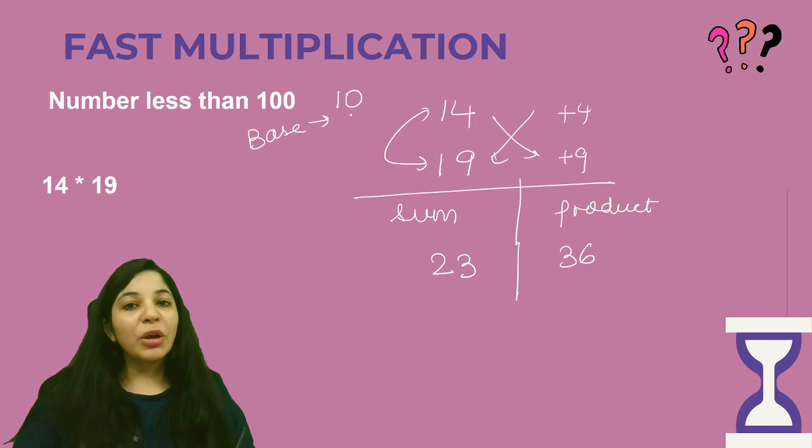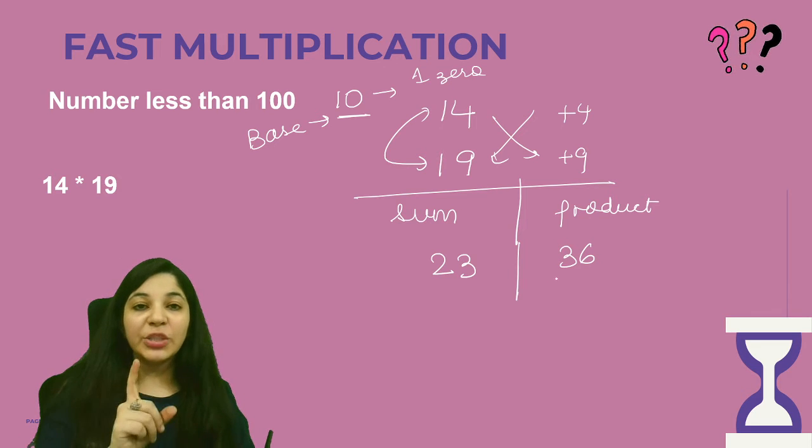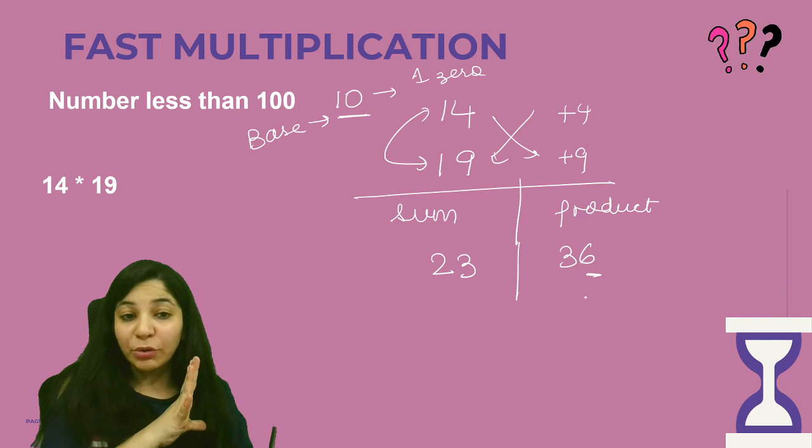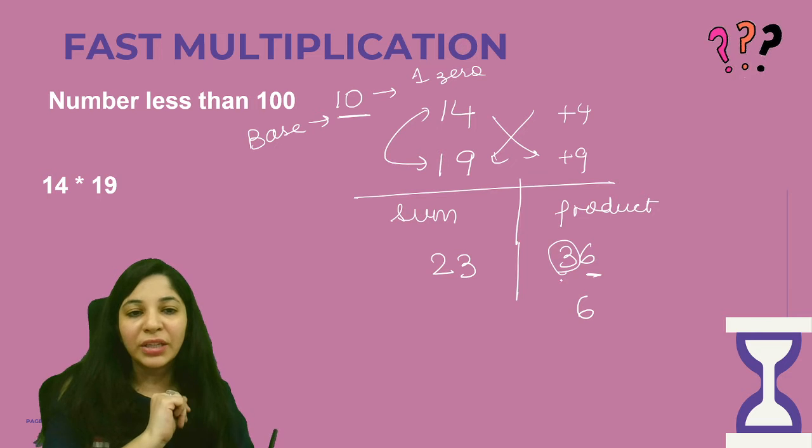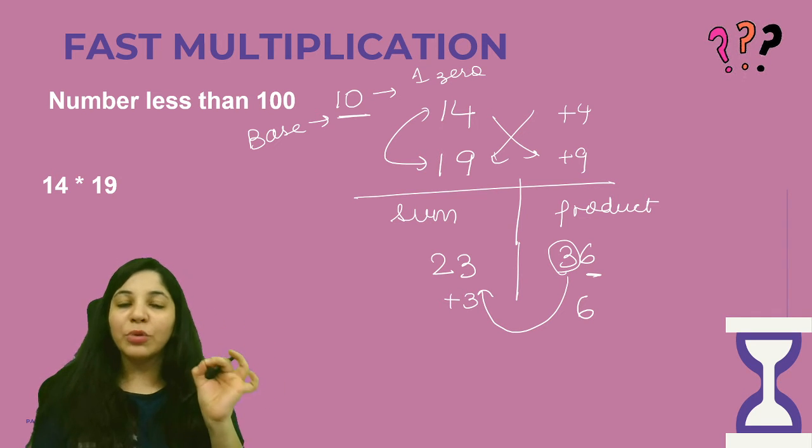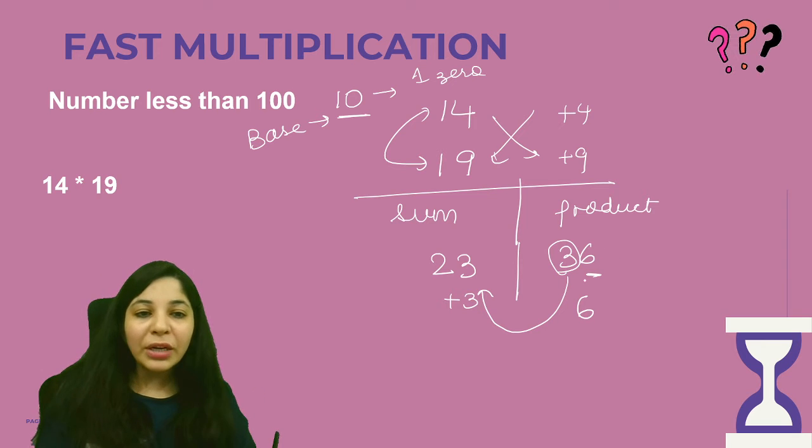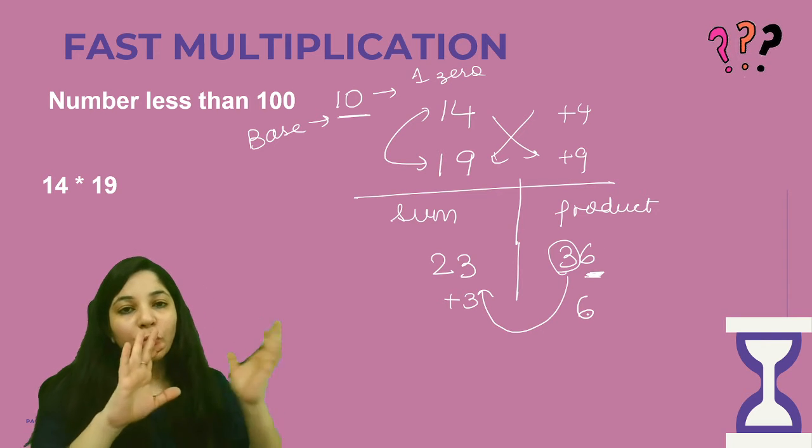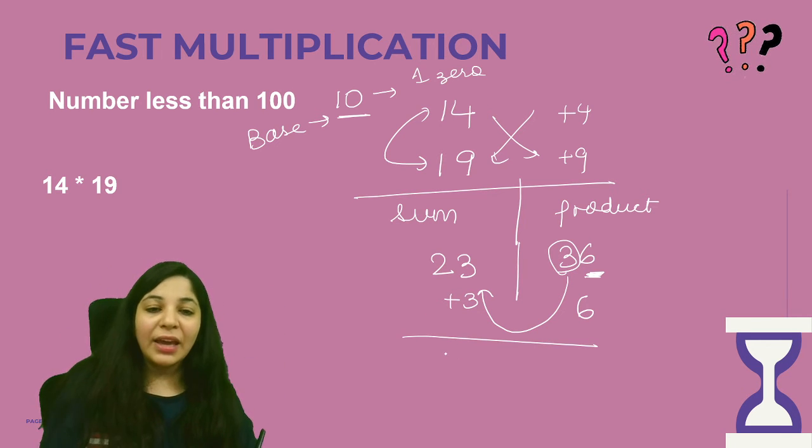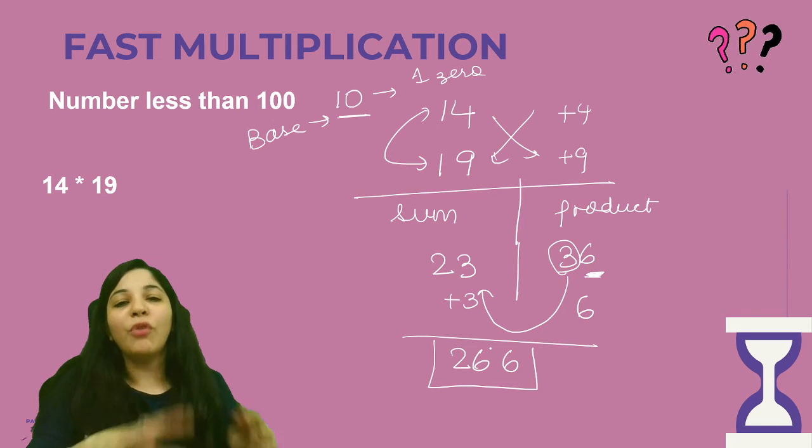But here is the catch because base has only one zero. That is why I am going to keep only 6 in the product side. On the right side, I will keep 6 and this value 3, it will come here and it will get added here. Because base has only one zero, I am going to take only one single unit. Unit digit is 6 on the right side and whatever value is there, that will get transferred to the left side and will get added up there. So it becomes 26 and 266 is the product of 14 and 19.